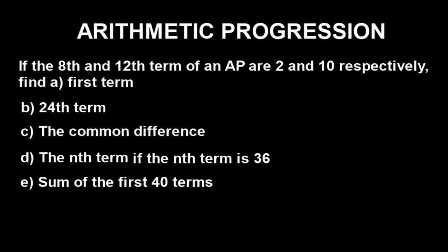Before we get the Casio calculator, let's quickly look at the question we have here and see what we are asked to find. The question says: if the 8th and 12th terms of an AP are 2 and 10 respectively, find: (a) the first term, (b) the 24th term, (c) the common difference, (d) the nth term if the nth term is 36, and lastly the sum of the first 40 terms.